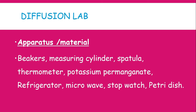After writing the skills, it is time to write apparatus and materials. Apparatus and materials are not the same thing and should not be used interchangeably. Apparatus refers to things that can be reused — such as a measuring cylinder, spatula, thermometer, refrigerator, microwave, stopwatch, and petri dish. Potassium permanganate would be considered a material; a filter paper is another good example. Once a material is used, it is thrown away.